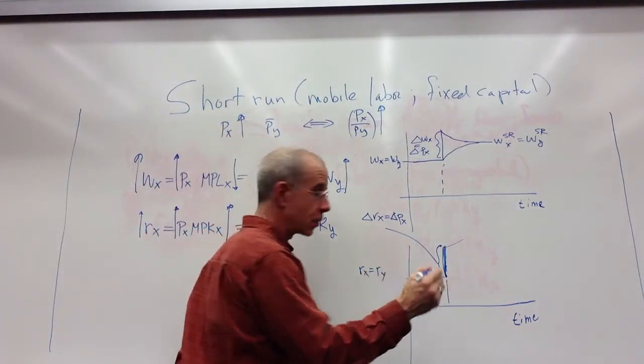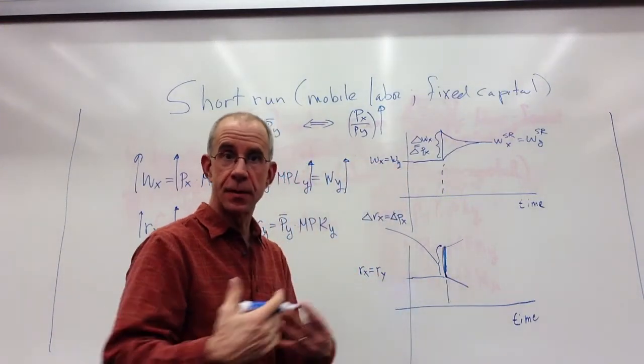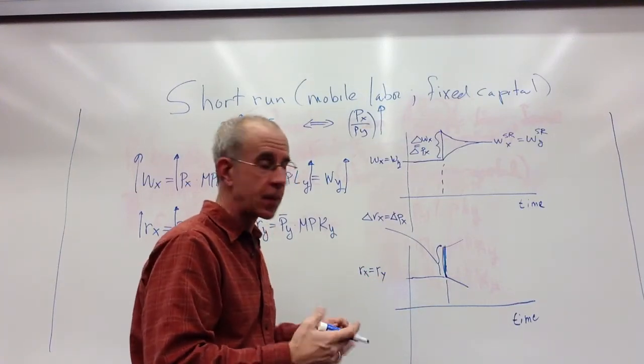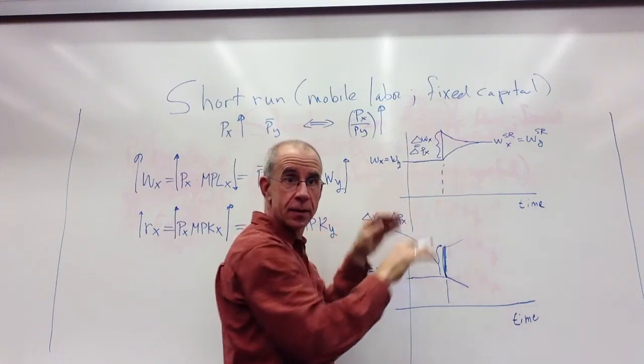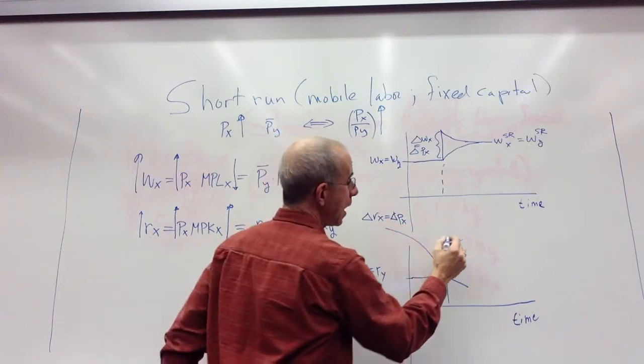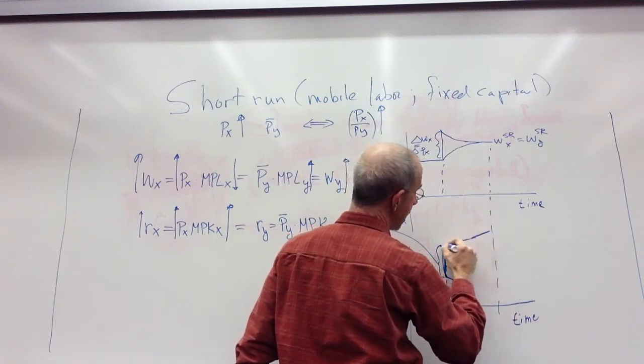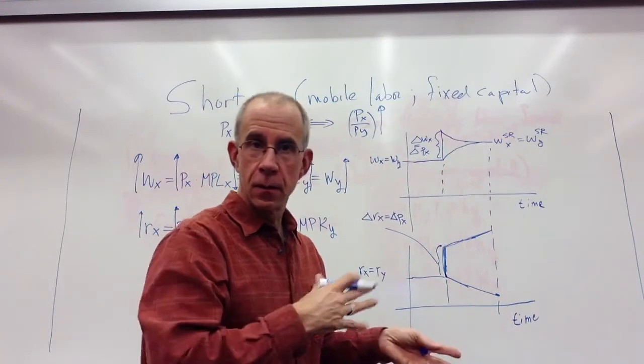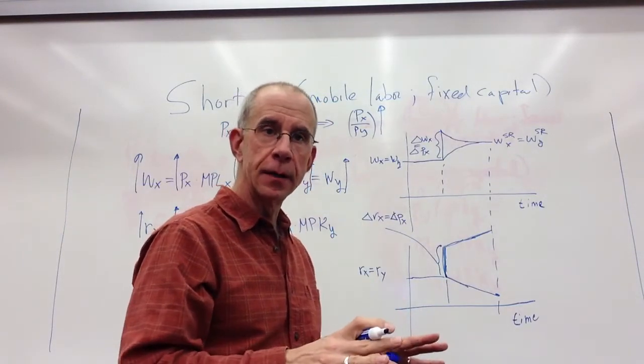The payment to capital in Y is going to start to go down because the remaining capital is less productive because there's less labor that remains in that sector to work with it. What you see is not a convergence as in the labor market, but a divergence as capital is affected by the movement of labor. This divergence will continue until the point where labor stops moving.